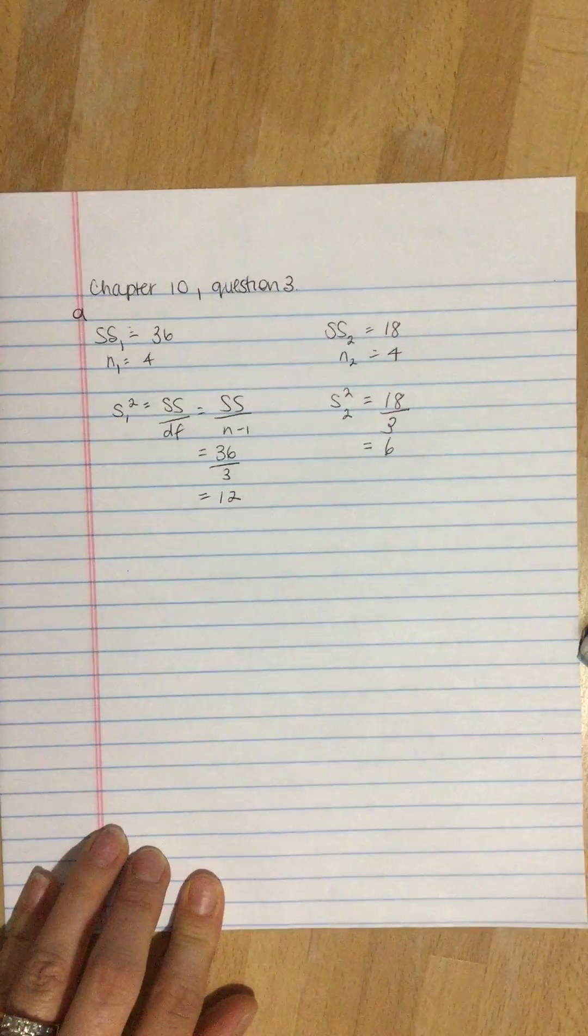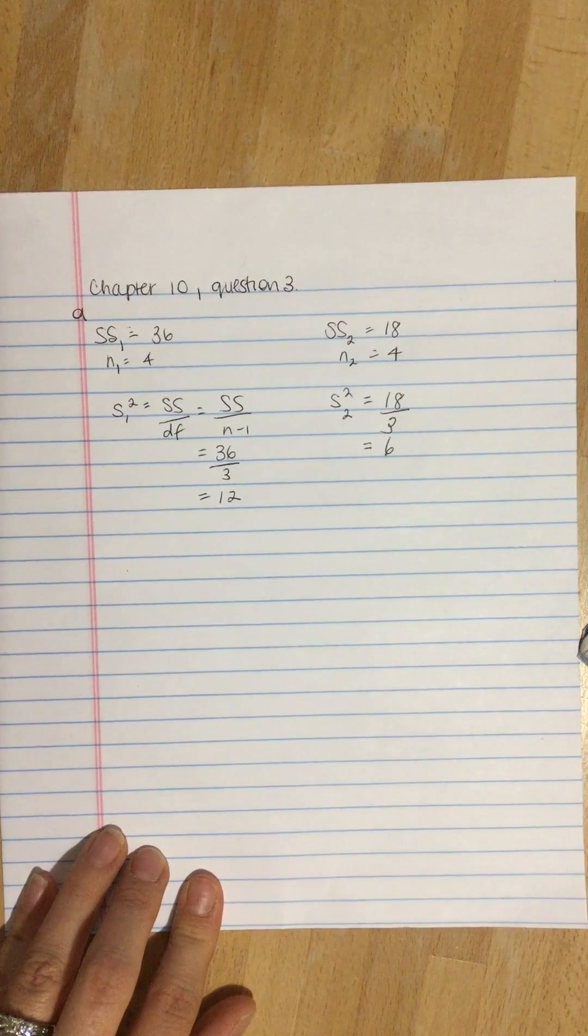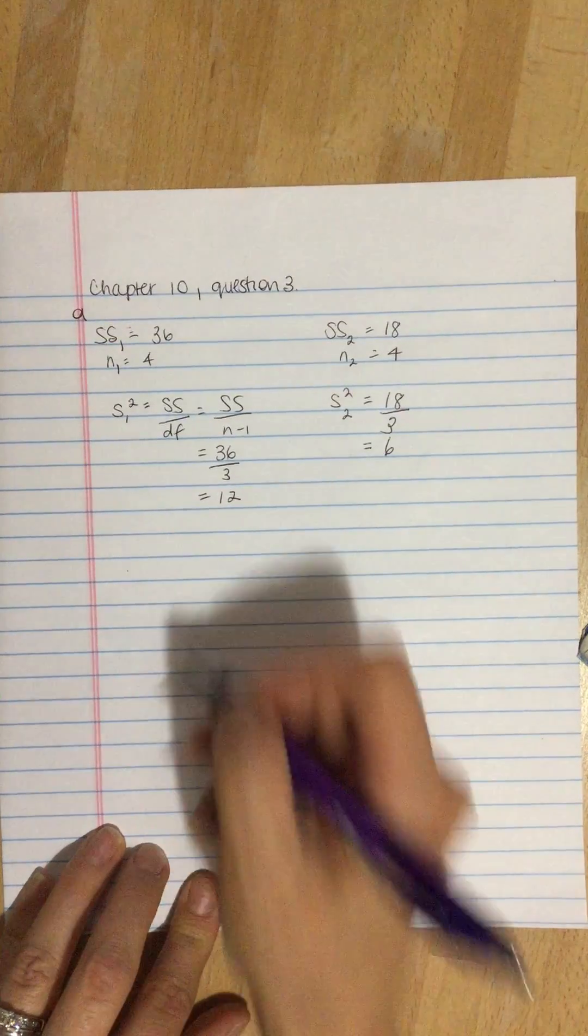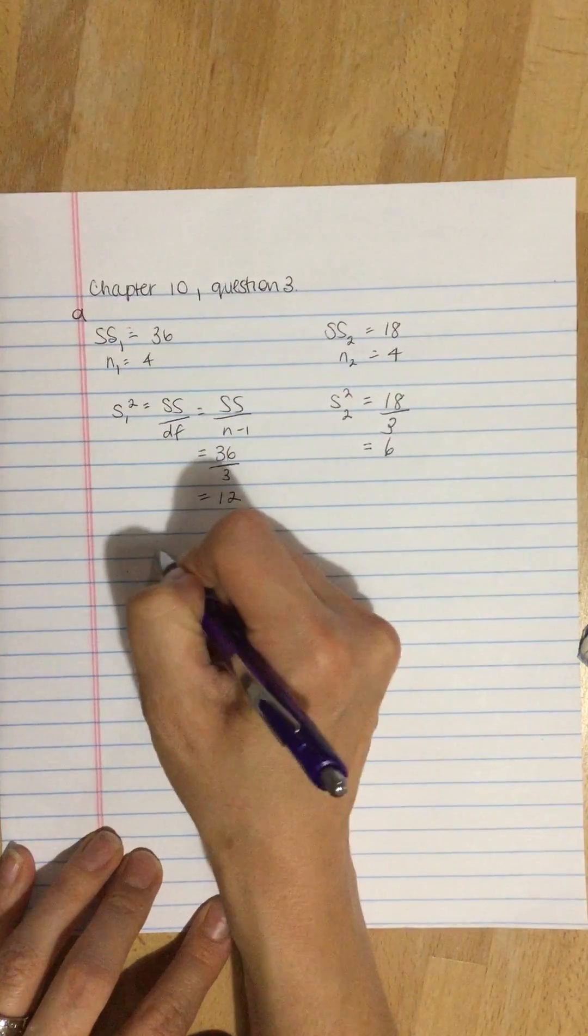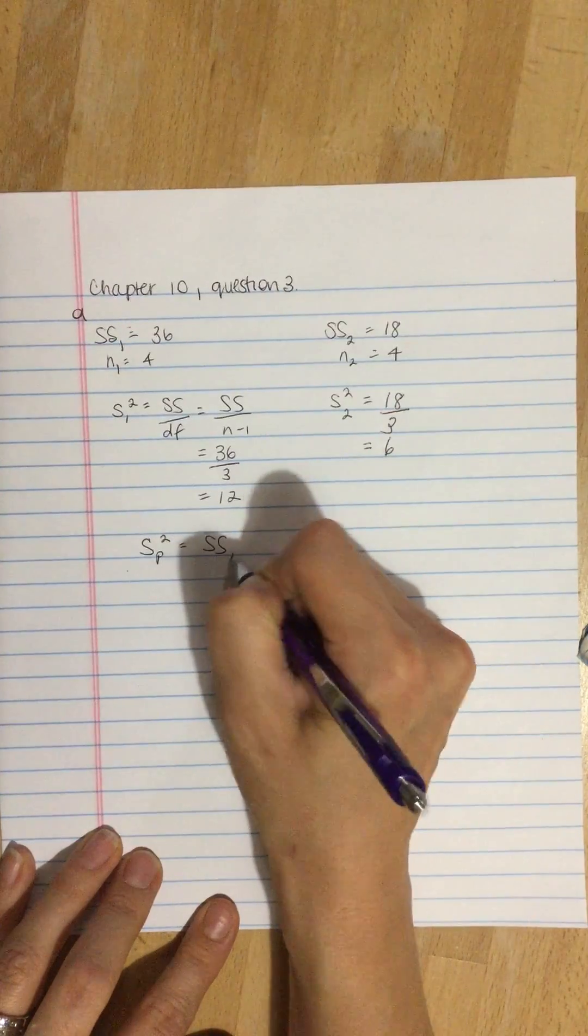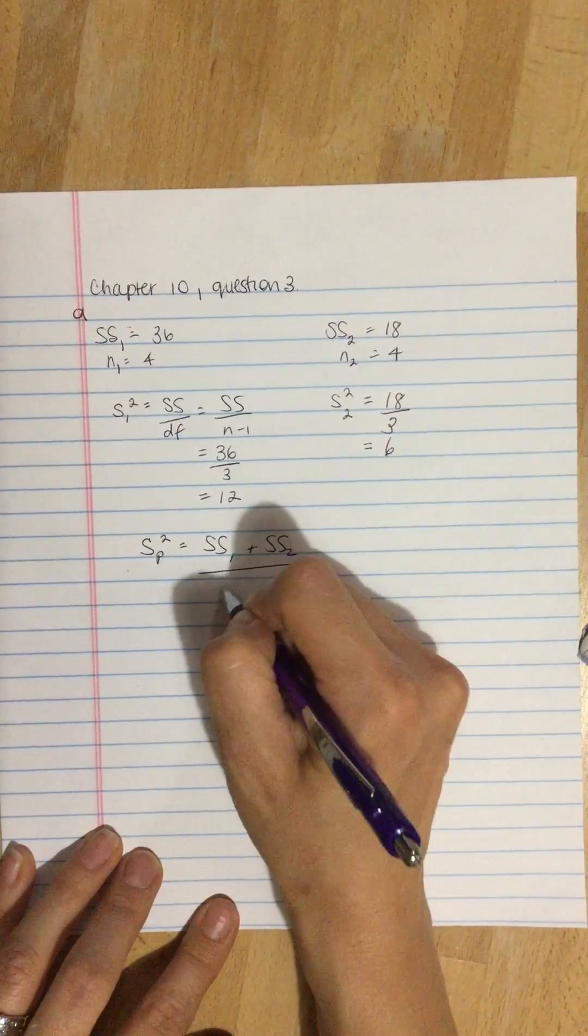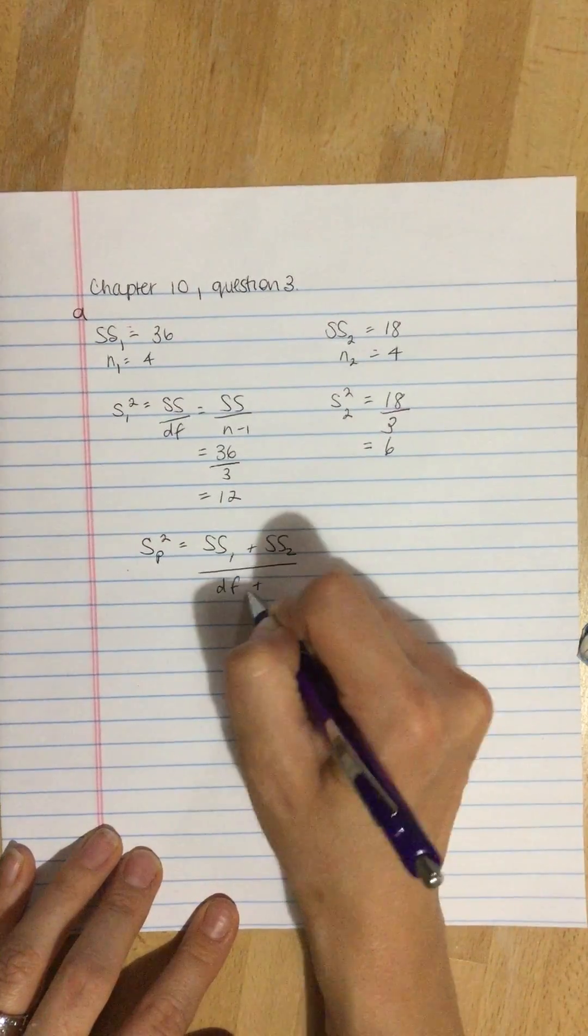These are our two variances, which was the first part. Now compute the pooled variance. The formula to calculate the pooled variance is sum of squares 1 plus sum of squares 2, divided by degrees of freedom 1 plus degrees of freedom 2.